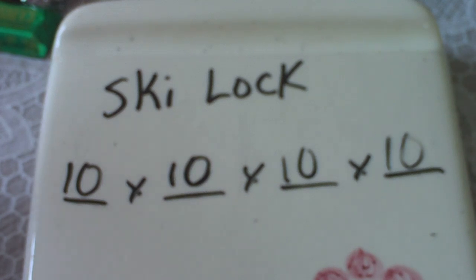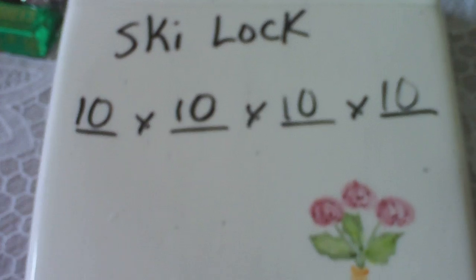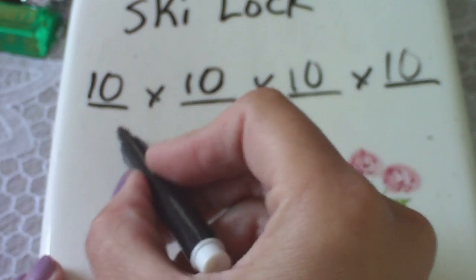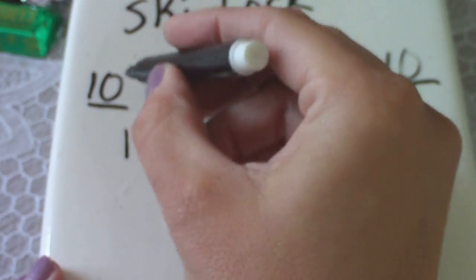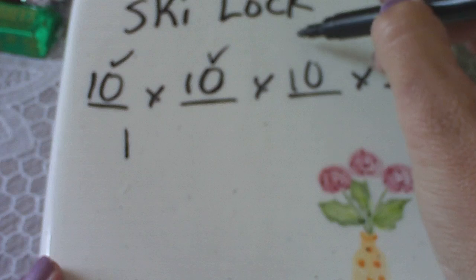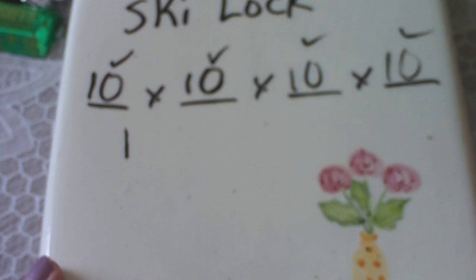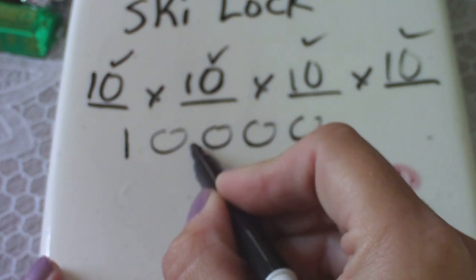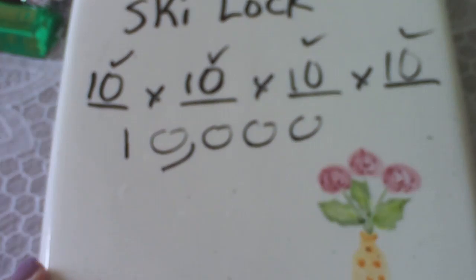So when we figure out how many different combinations there are, we can use the counting principle. This one's nice and easy because we just multiply: 10 times 10 times 10 times 10. You just count up the number of zeros — that's 4 zeros — so the answer is we have 10,000 different combinations.